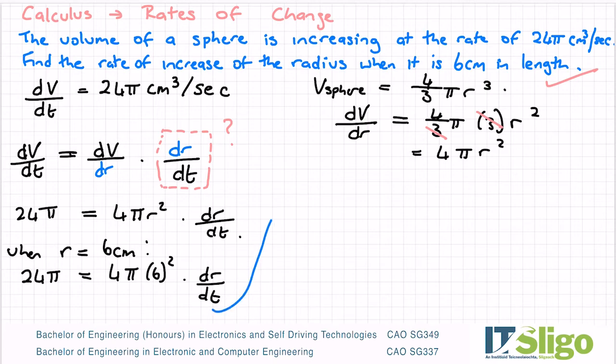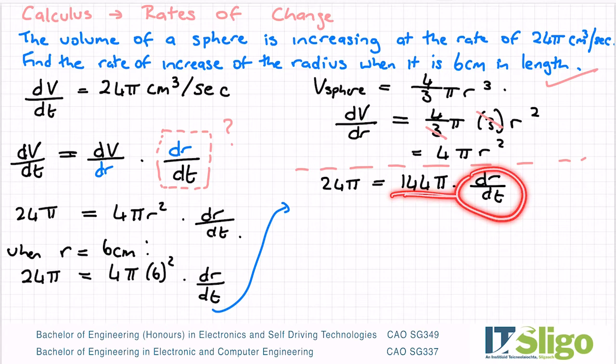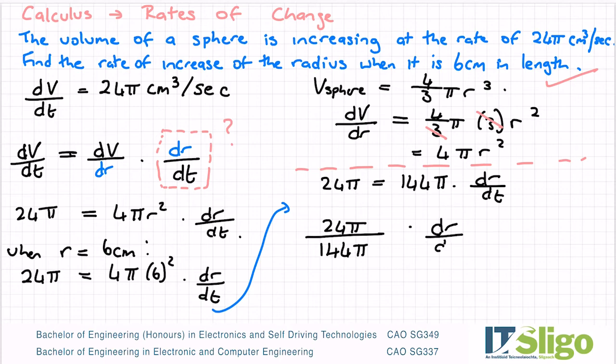I'm just going to continue that up here. So I have 24π being equal to 6 squared is 36, times 4 is 144π, times dr/dt. I need dr/dt, so let's divide across by 144π. So I end up with 24π over 144π times dr/dt. The πs cancel, and you're left with... using a calculator, you're left with 1/6.